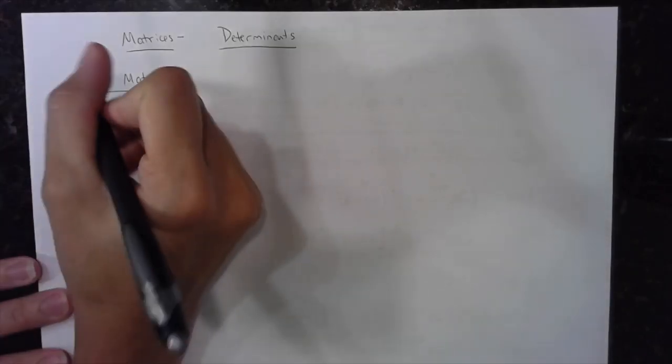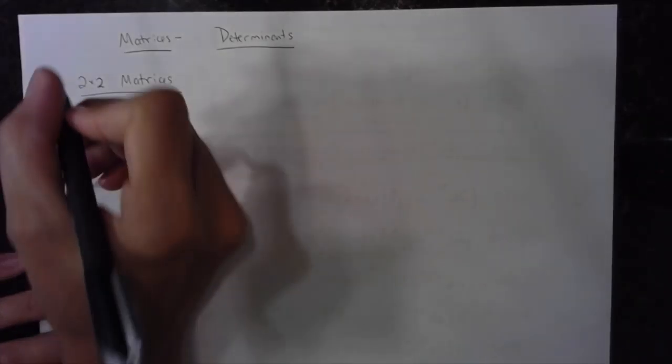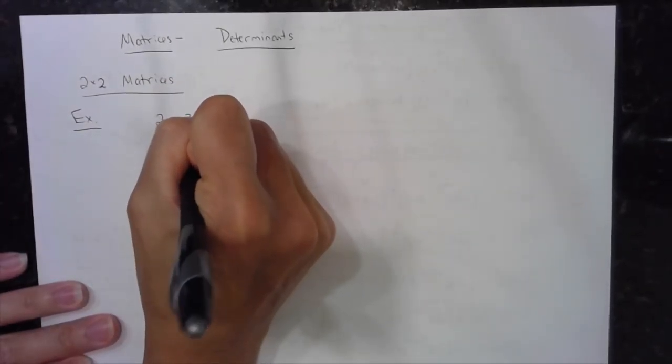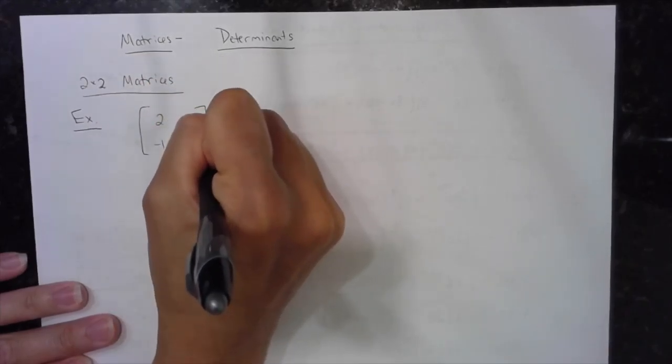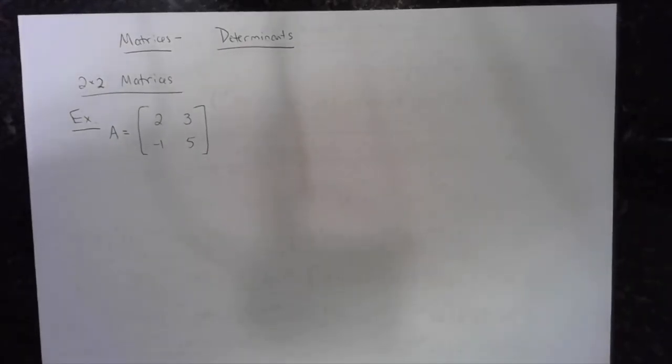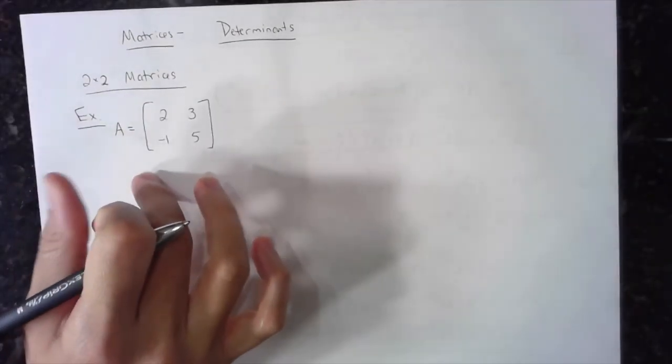Hopefully we all know what a matrix is. A two by two matrix is a square matrix because it has the same number of rows as it does columns. You're only going to deal with determinants for square matrices. Here is an example of a square matrix. We'll say that this is matrix A.